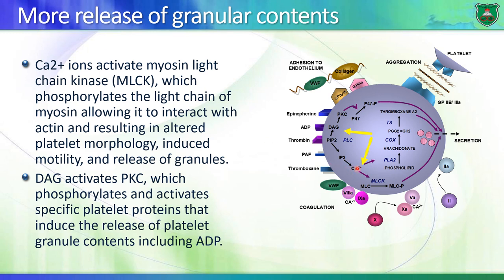What calcium ions do in addition to activation of phospholipase A2 is bind to a kinase known as myosin light chain kinase. It phosphorylates myosin light chain, and this phosphorylated myosin light chain stimulates further fusion of these granules with the plasma membrane, eventually releasing their contents. Myosin light chain kinase also modifies the actin cytoskeleton, inducing motility and changing platelet morphology, leading again to more aggregation of platelets.